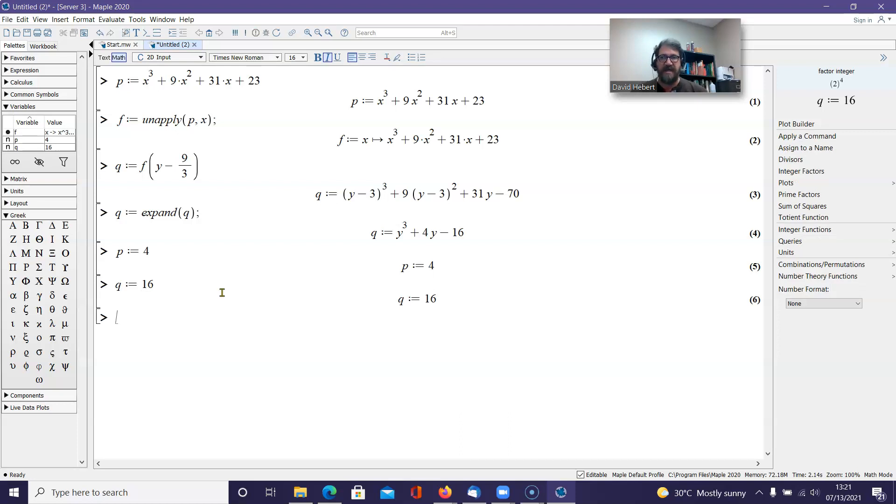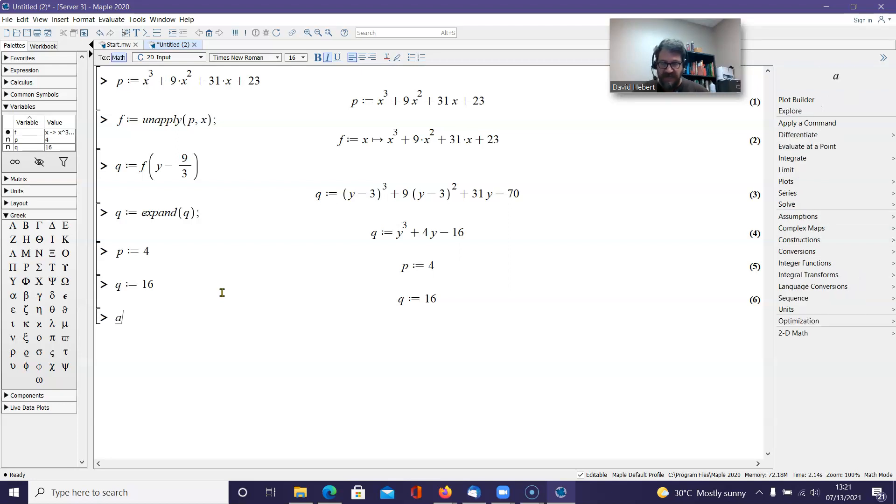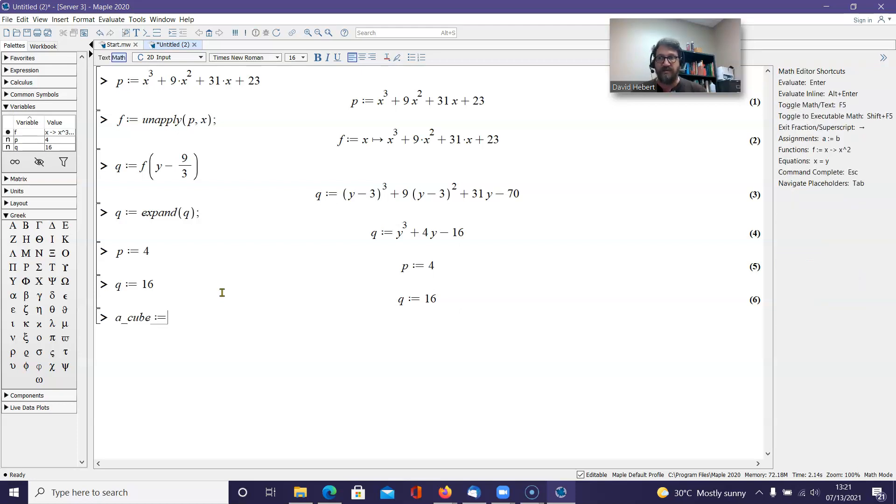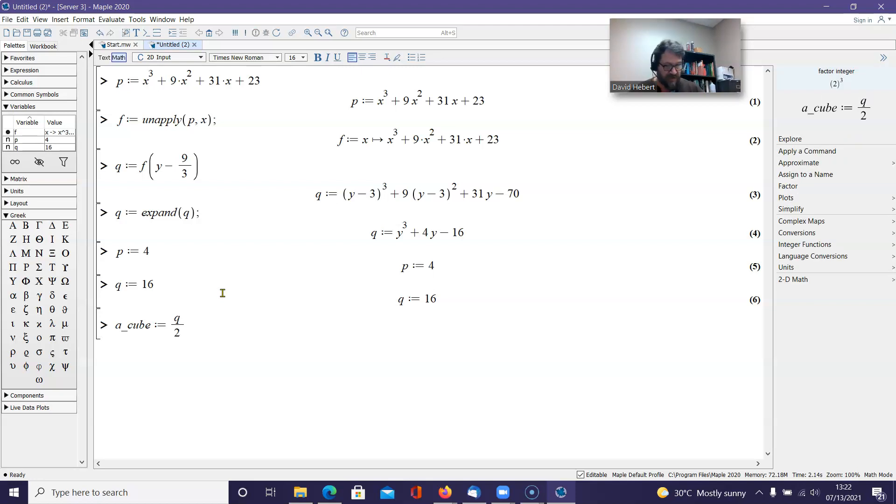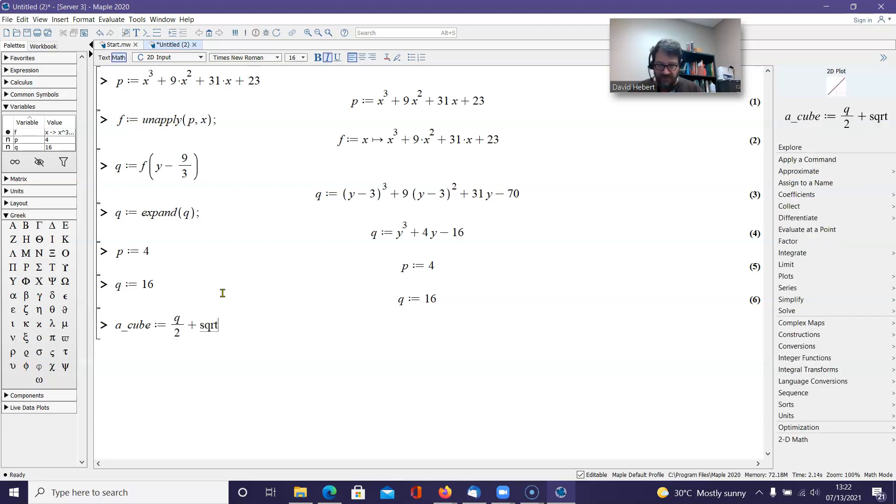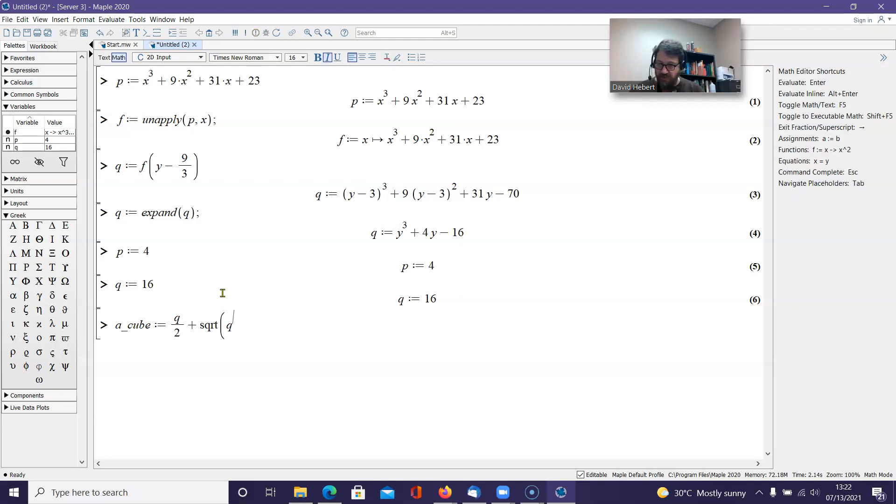So with that being the case, I can now go back to those equations I solved and type them in. If you remember, we had a cubed. So I'm going to type in a cubed is going to be equal to... I have my book here with me. So I'm going to look in my book and I see that a cubed is going to be equal to q divided by 2 plus the square root of q squared divided by 4.